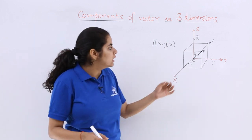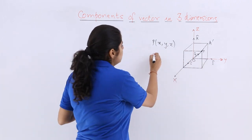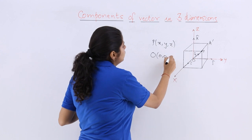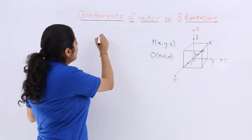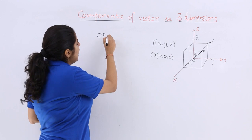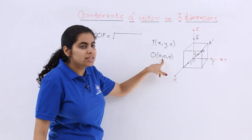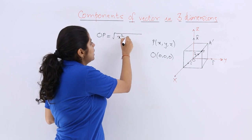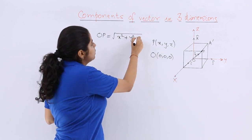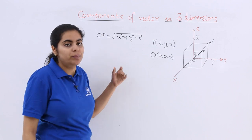Now if I have to find what is OP, specifically speaking O would be 0, 0, 0 because that is the origin. So OP has the magnitude according to the distance formula: x minus 0 whole square, which is x square, plus y minus 0 whole square, plus z minus 0 whole square. So that is OP.